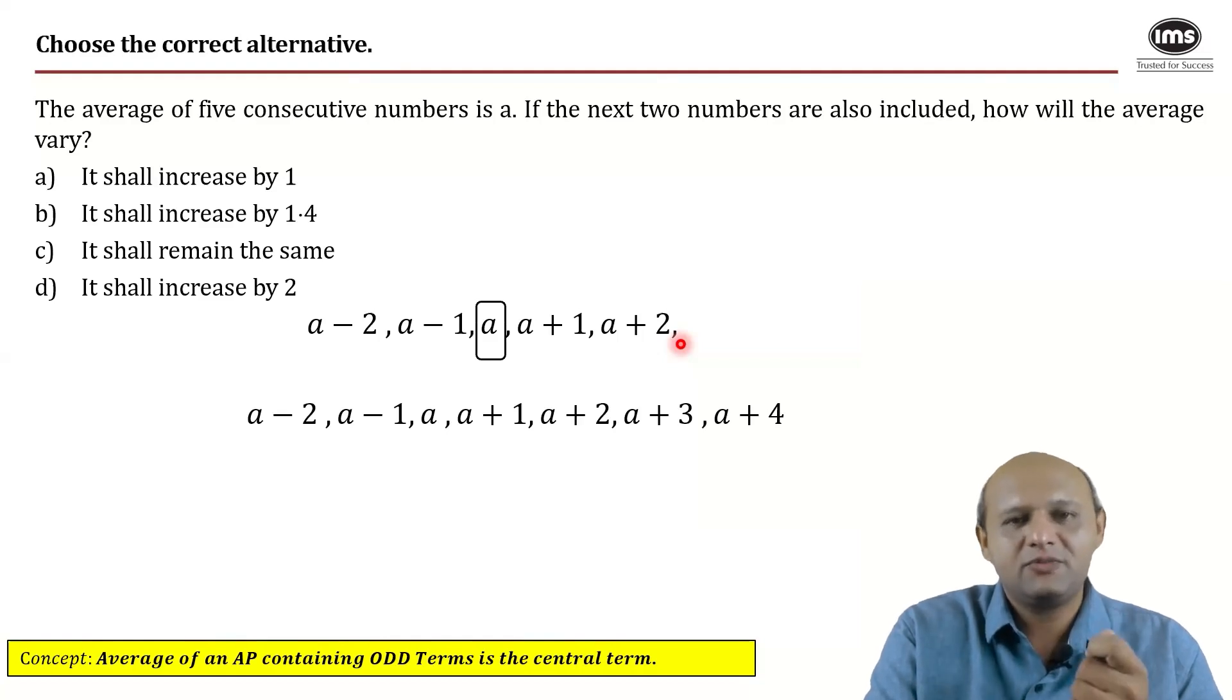So being aware of such small important properties would help you eventually solve questions orally. So this is virtually orally solvable. Because this is a and then the next number is a plus 1. The average of the next series is a plus 1. So what is happening to the average? The average is increasing by 1.